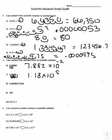For number eight, you're going to move the decimal one, two, three, four, five, six times, and get 2.72338 times 10 to the negative sixth power.